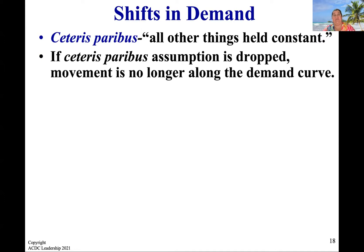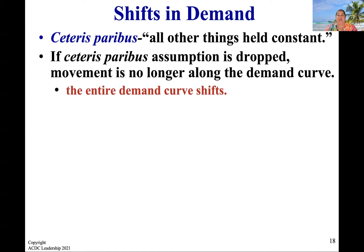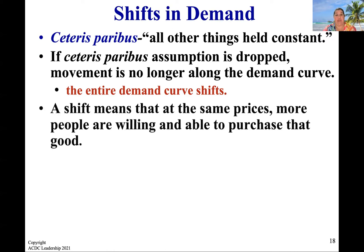So what happens if we take away the assumption that nothing else in the world could ever possibly change? We're going to see some changes to the way demand looks. Instead of just moving along the curve with the relationship between price and quantity demanded, the entire curve is going to shift — just like when we were doing the PPC and we had changes in technology or a natural flood that wiped out all resources. The whole curve can shift, and the same thing happens with the demand curve.